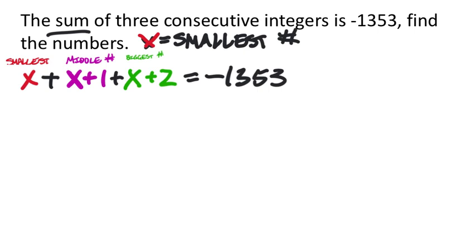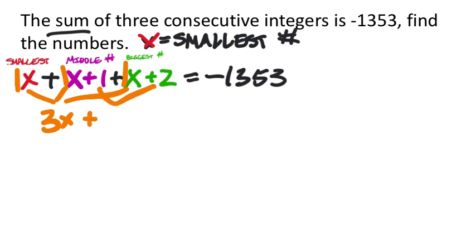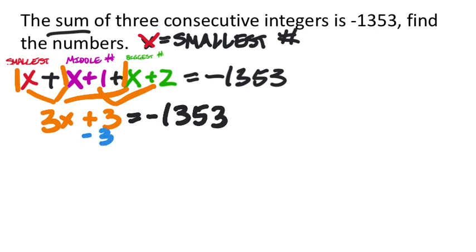This becomes an equation I can solve by combining like terms. I have 1x, another 1x, and another 1x — that gives 3x. Combining the constants 1 and 2 gives a positive 3. So: 3x + 3 = negative 1,353. Now I need to isolate x by subtracting 3 from both sides.